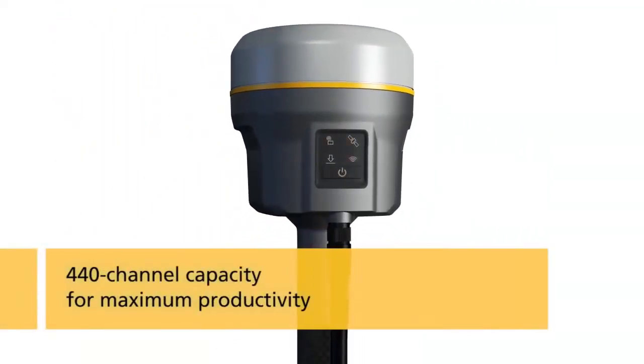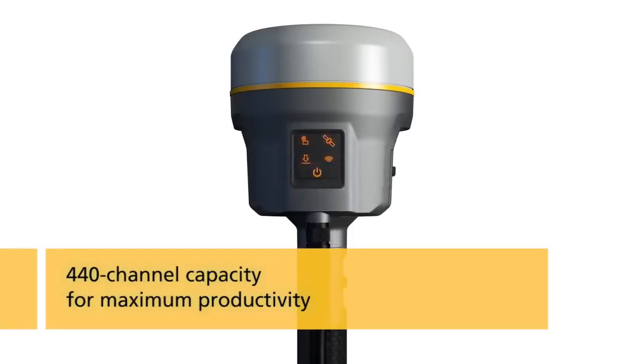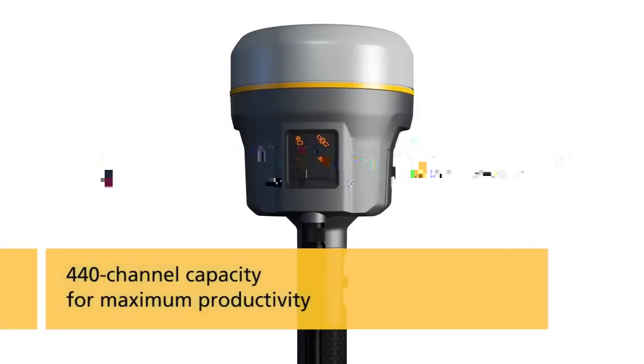Trimble HD GNSS also provides a breakthrough in ambiguity resolution technology that is made possible by a number of factors. Trimble's latest R-10 receiver with its 440 channel capacity is capable of tracking 60 satellites.